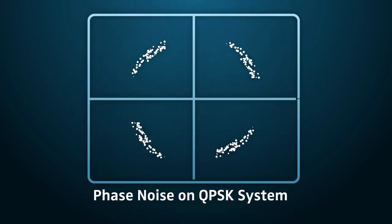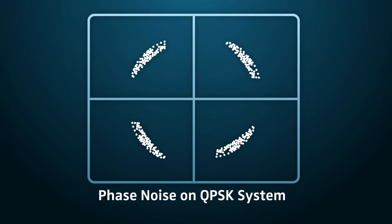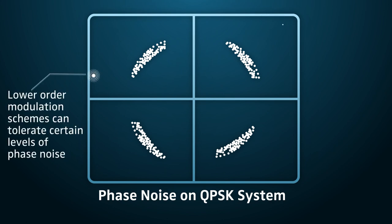Phase noise causes the points on a constellation diagram to rotate around the origin. Lower order schemes, like QPSK, may be able to tolerate variations in phase to a certain degree.